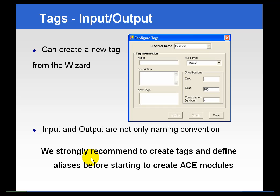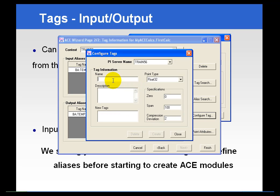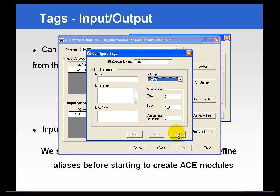We do recommend that you create the tags or define aliases before you create the ACE modules, but if you get to this point and realize you don't have one of the tags you need — most likely it's for an output and not the input, since your inputs will generally be there initially — you can use the configure tag button to create a tag by simply entering a tag name and then setting the zero, span, and compression deviation for your tag. Notice that all of the valid point types are available for creating tags.